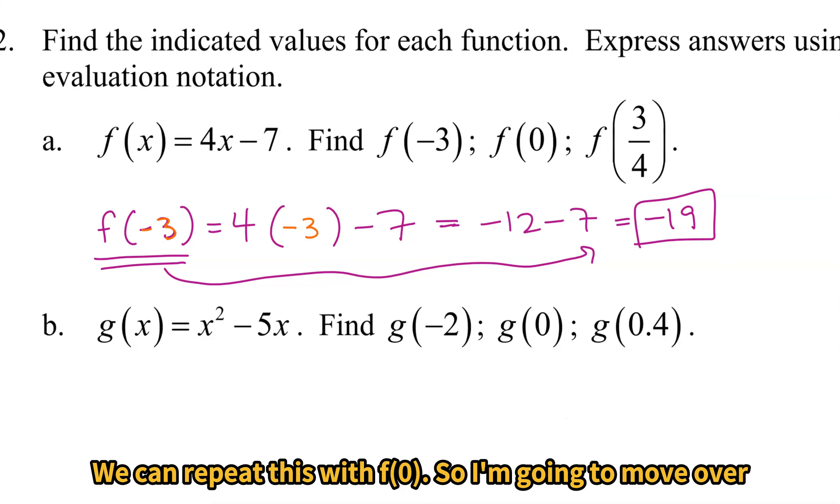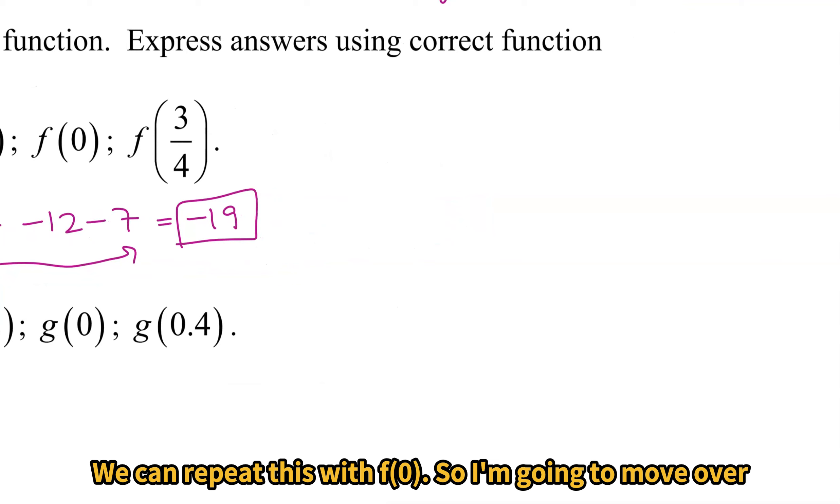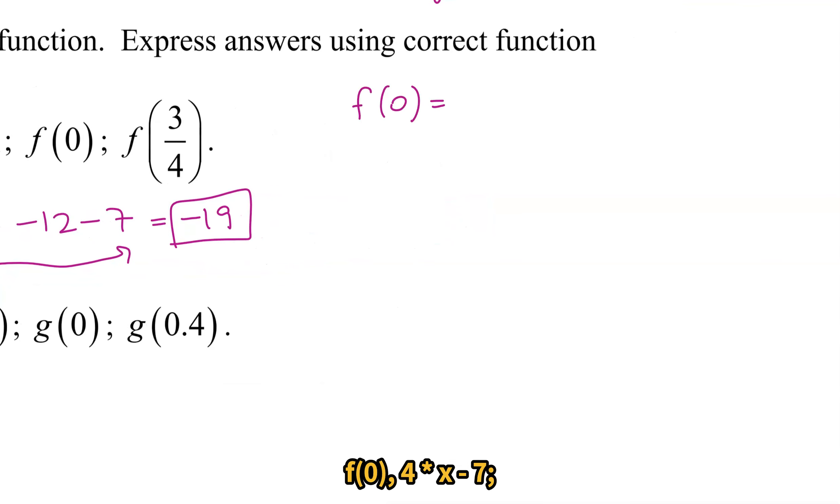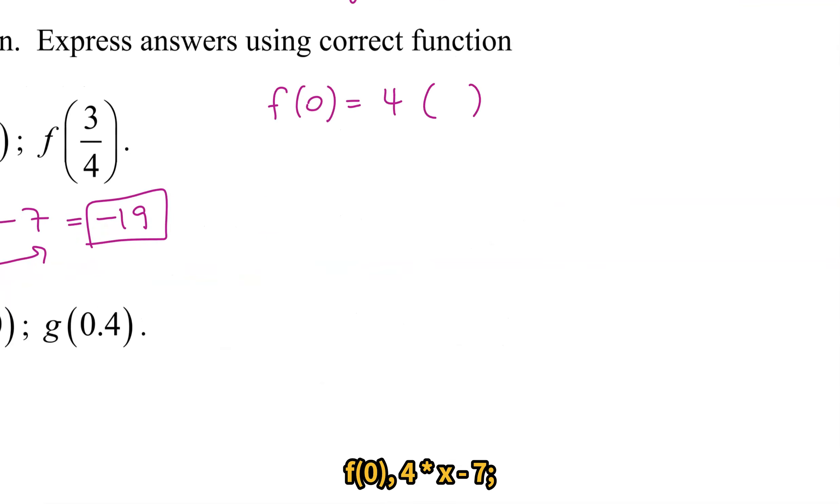We can repeat this with f(0), so I'm going to move over so I have more room. f(0), 4 times x minus 7, I'll plug in the 0 here in for x. 4 times 0 is 0, 0 - 7 is -7.